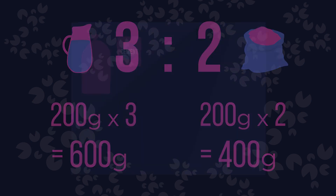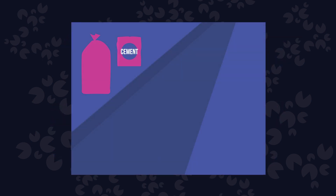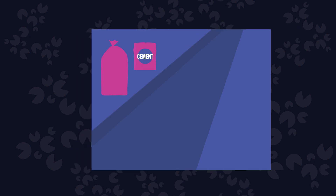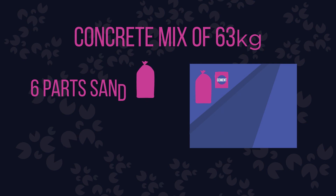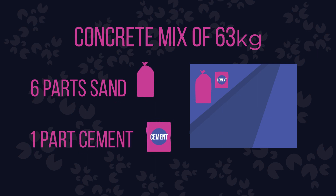Now you try. You are helping your grandpa build a path. You need to make a concrete mix of 63 kilograms. Your grandpa told you to mix six parts of sand and one part of cement. How many kilos of each do you need? Pause while you calculate.